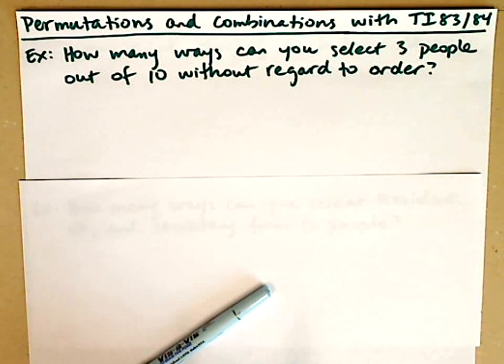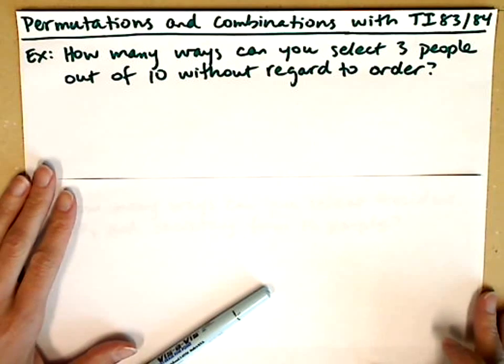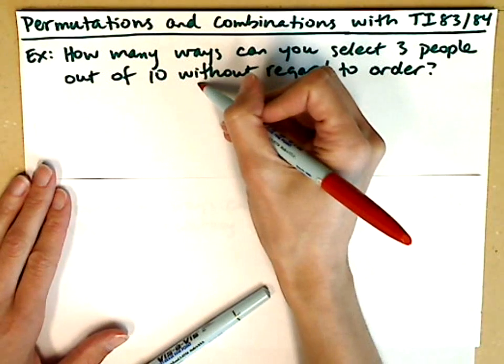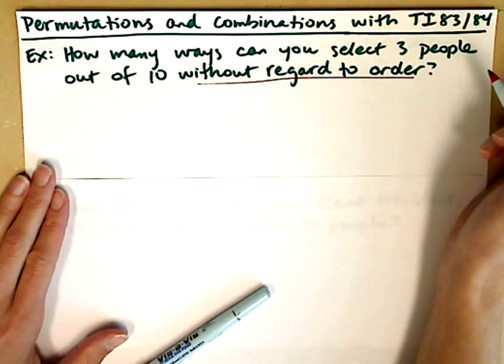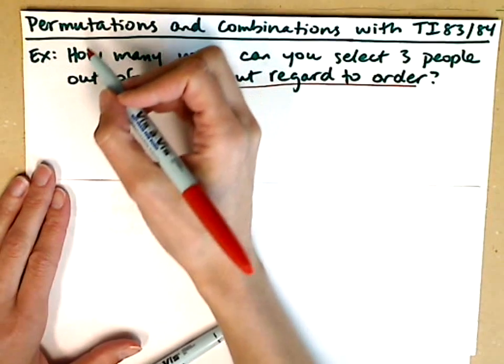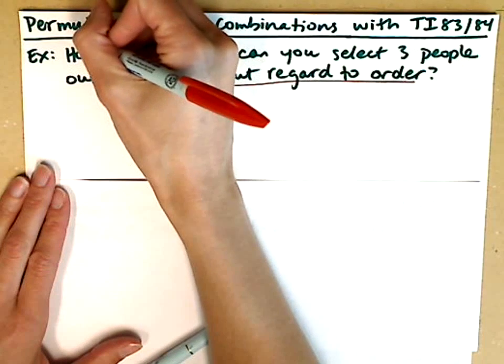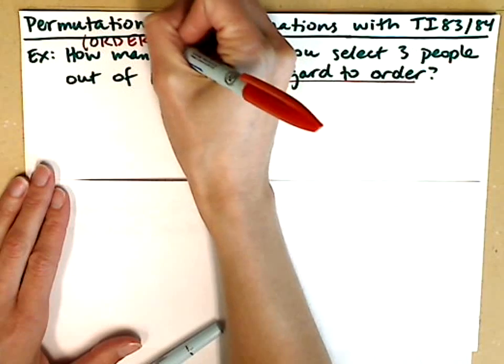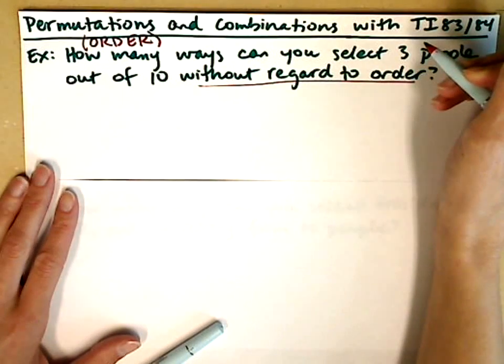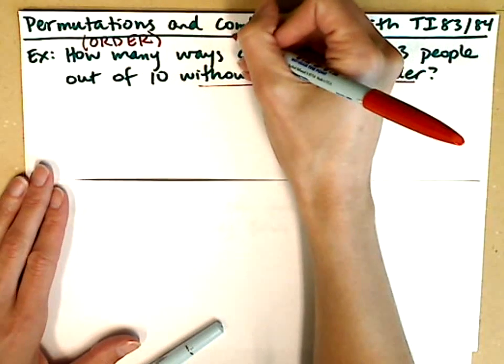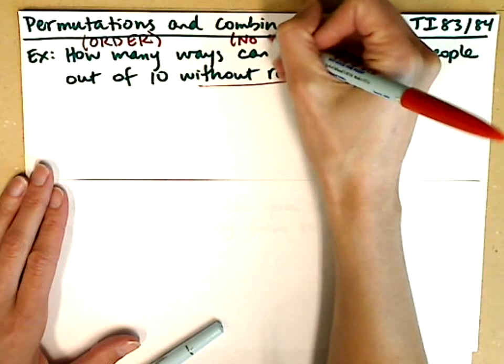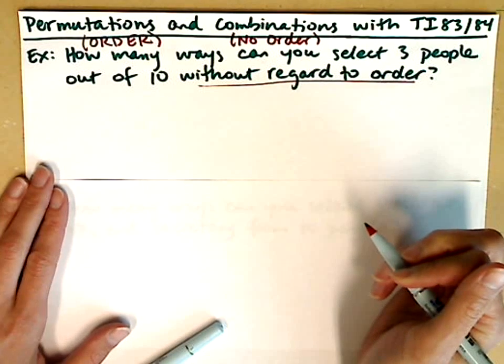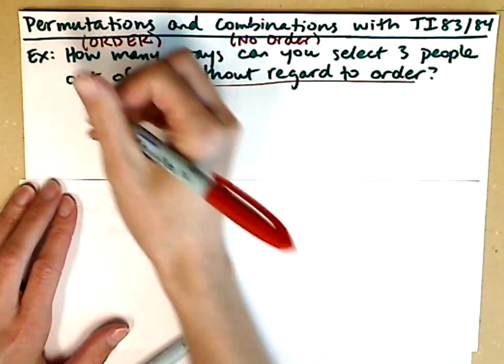Our first task is to decide whether we're going to use a permutation or a combination. The key word here is order, and in this case, it's without regard to order. By definition, a permutation is an ordering, so for permutations, order matters. A combination is just a grouping of items, so for combinations, order does not matter. In our example, we're doing this without regard to order, so we'll be doing a combination.